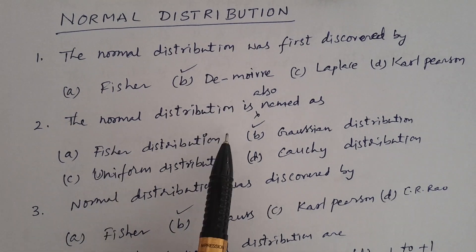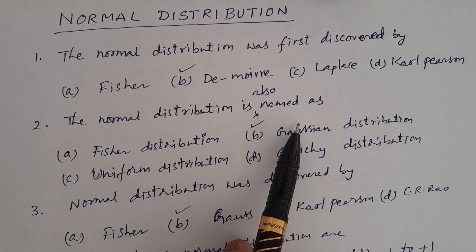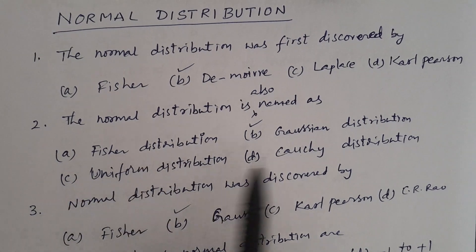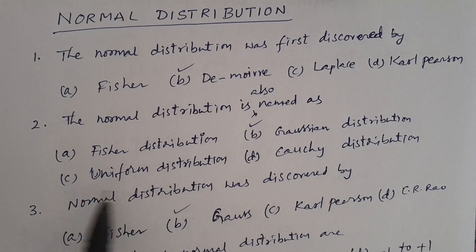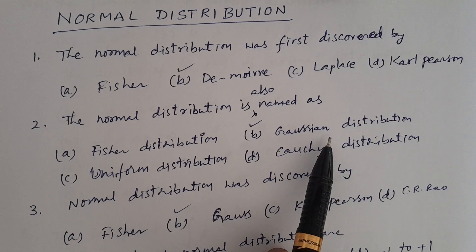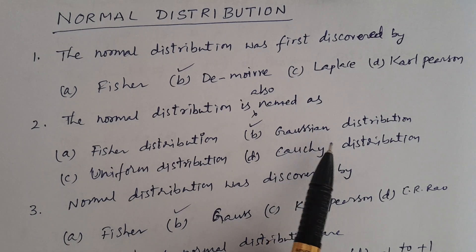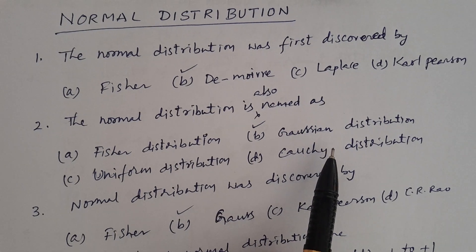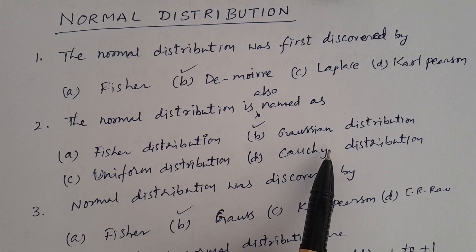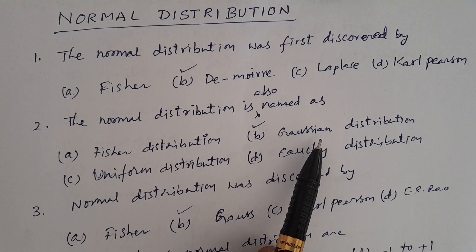Question number two. The normal distribution is also named as? Options: A. Fisher distribution, B. Gaussian distribution, C. Uniform distribution, D. Cauchy distribution. The answer is Gaussian distribution, option B. Gauss contributed in many ways; the importance of normal distribution was discovered by Gauss, therefore it is also known as Gaussian distribution.